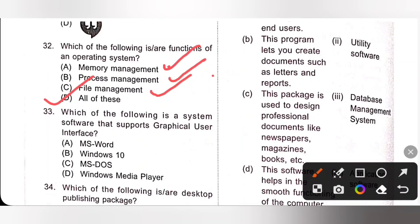Question 33. Which of the following is a system software that supports graphical user interface, that is GUI? It is Windows 10. Option B is the correct answer.